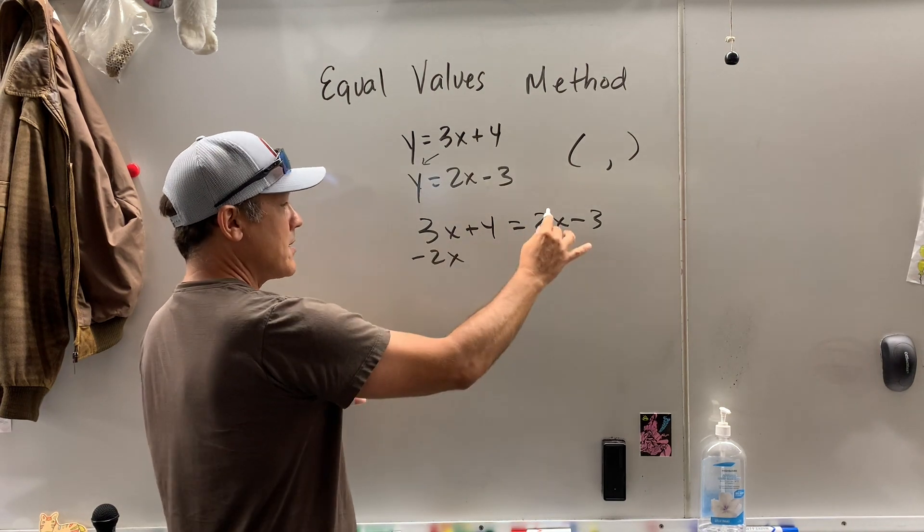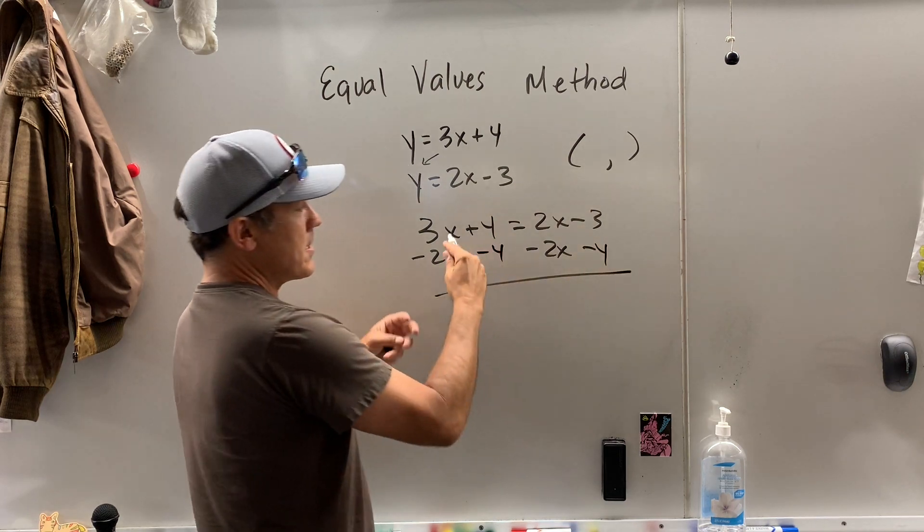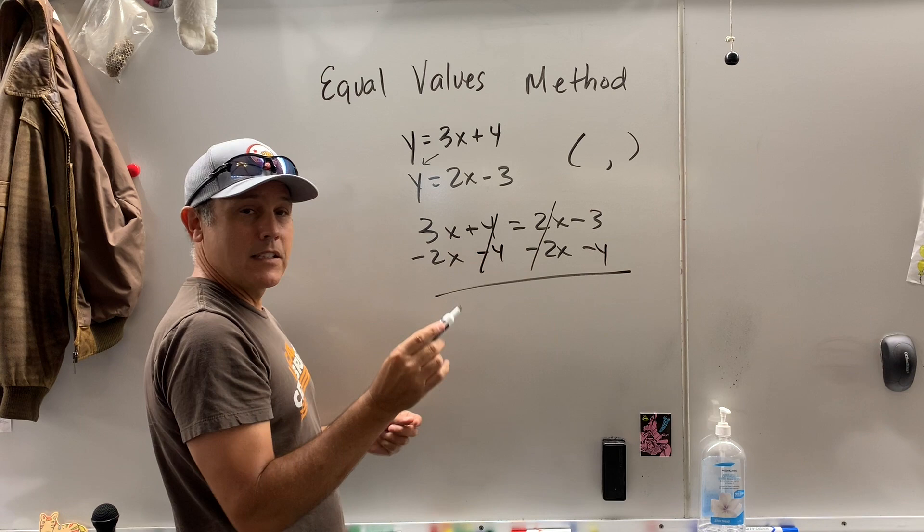So if I bring the x's to the left, I got to bring the numbers to the right. So I'm going to do that. And the reason I do it all at once is that I get to go the double.